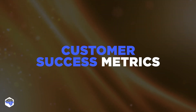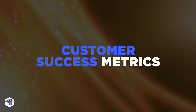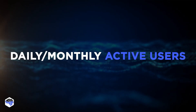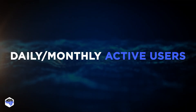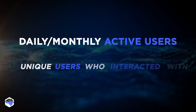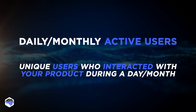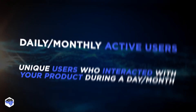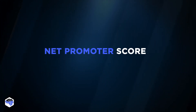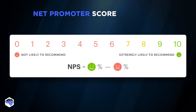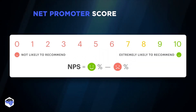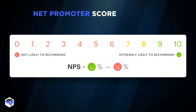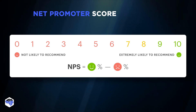The third group of metrics is Customer Success Metrics. It includes Daily Active Users and Monthly Active Users, which mean the number of unique users who interacted with your product during a day or a month, respectively. Net Promoter Score asks a single question about the possibility of recommending a service or brand to a friend or a colleague.